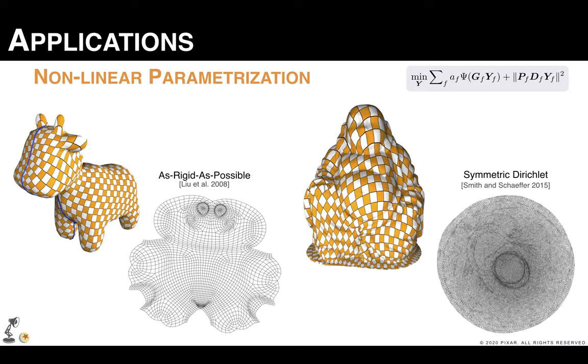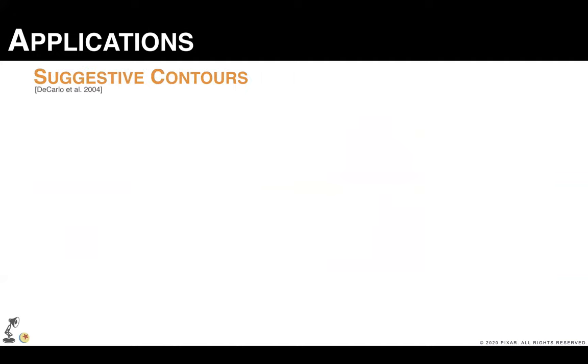So here's a result using the as-rigid-as-possible distortion model to parameterize a quad mesh. And here's another example using the symmetric Dirichlet energy to parameterize a hexagonal mesh. Let me point out that if we were to triangulate the polygons for these parameterizations, the evaluation of a distortion function and its derivatives would become more costly, because there are more triangles than polygons. Just for reference, in the case of the as-rigid-as-possible parameterization, the triangulated version took more than double the time required by the quad mesh version.